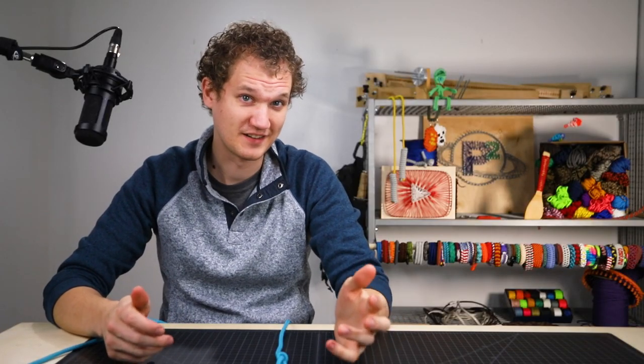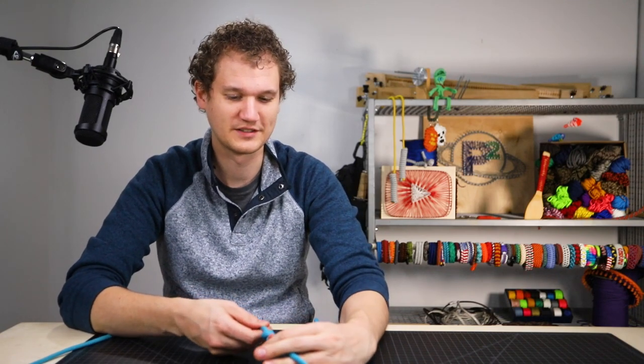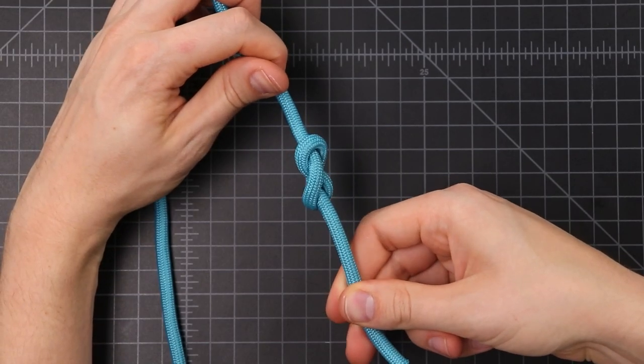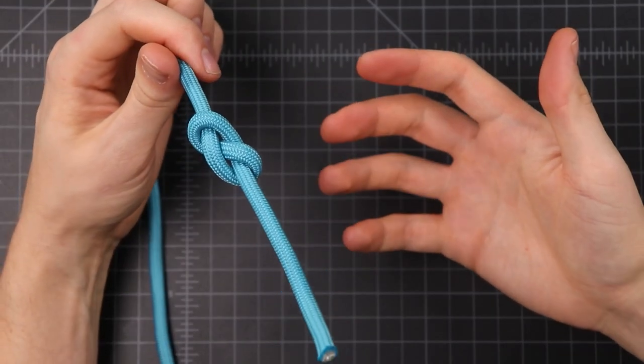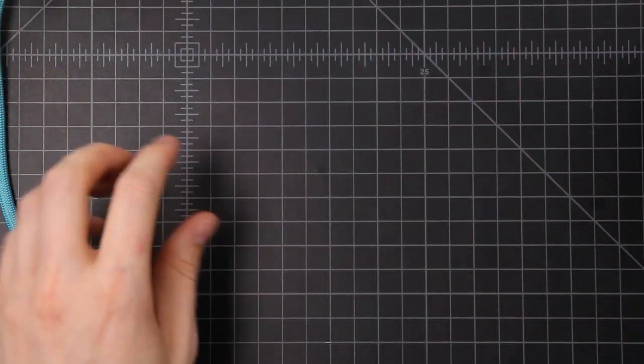The next knot is the figure eight stopper knot, and this one is used a lot in climbing. And I'm not going to attempt to give you climbing advice because that would be a very bad idea on my part, but you can tell where it gets its name from. It looks exactly like a figure eight. This one's easy to tie and untie, and it also has some other purposes. So let's make it.